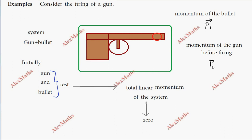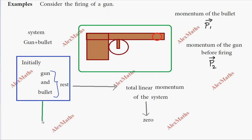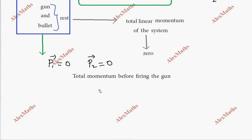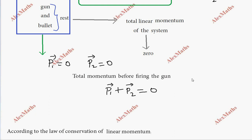Before firing, both the gun and bullet are at rest. That is, P1 vector equals zero and P2 vector equals zero. So the total momentum before firing is zero. According to the law of conservation of linear momentum, after firing the total momentum must also equal zero.